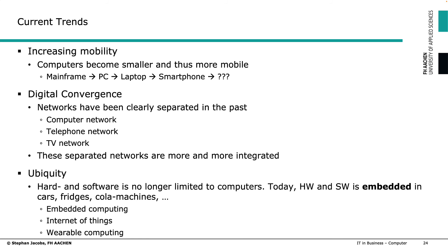Another thing is digital convergence. Looking back 20 years, we had separate networks for computers, telephones, TV, and even electricity. Nowadays these are increasingly mixed. I can run computer data over a telephone network, watch TV using my telephone network, and run computers over a TV network. This is good because we become more flexible, but there's a drawback: we become more vulnerable. A virus that in the past was limited to the computer network can now spread into telephones and TVs as well.